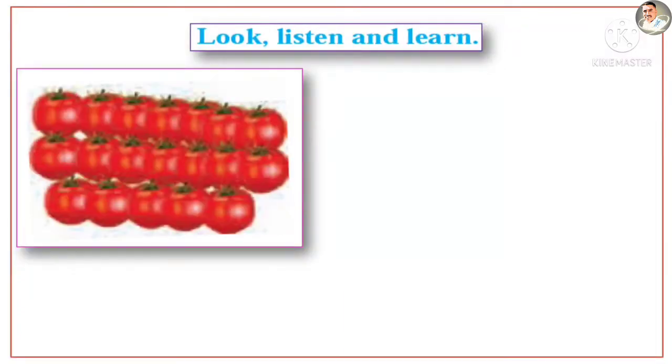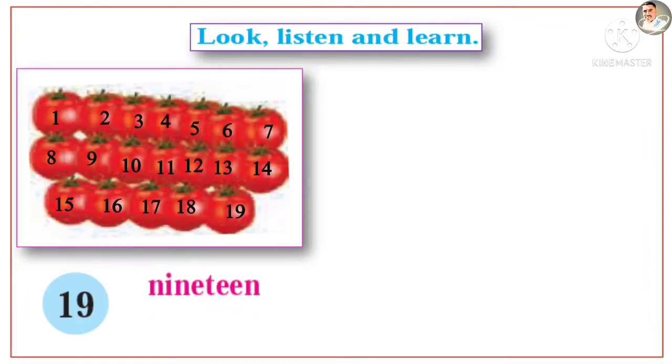How many tomatoes are there? 19. Nineteen. N-I-N-E-T-E-E-N. 19 tomatoes.